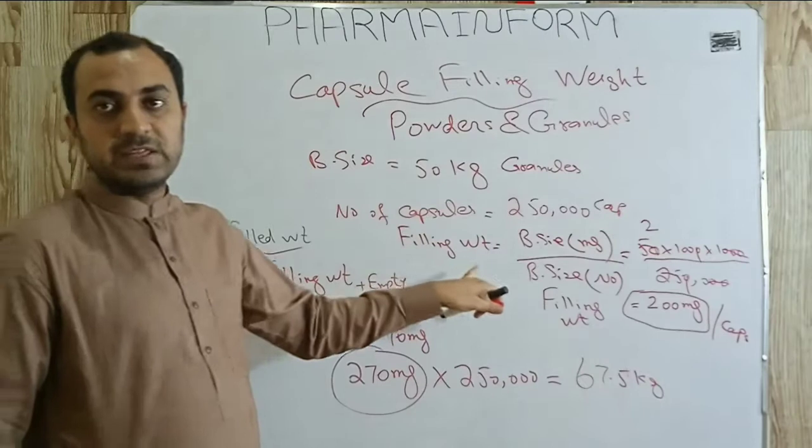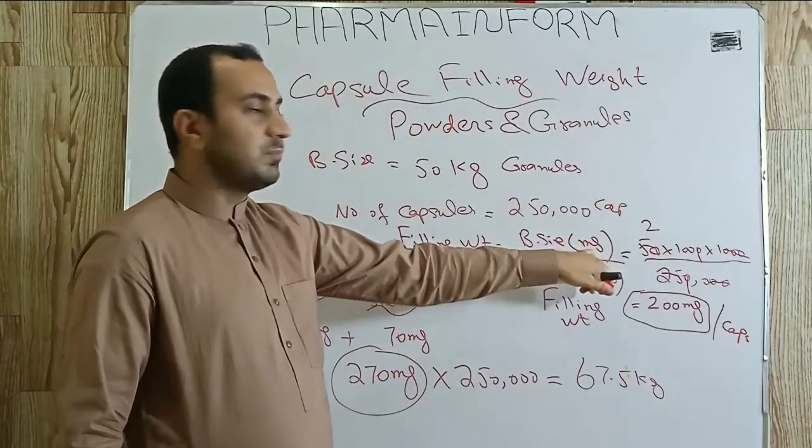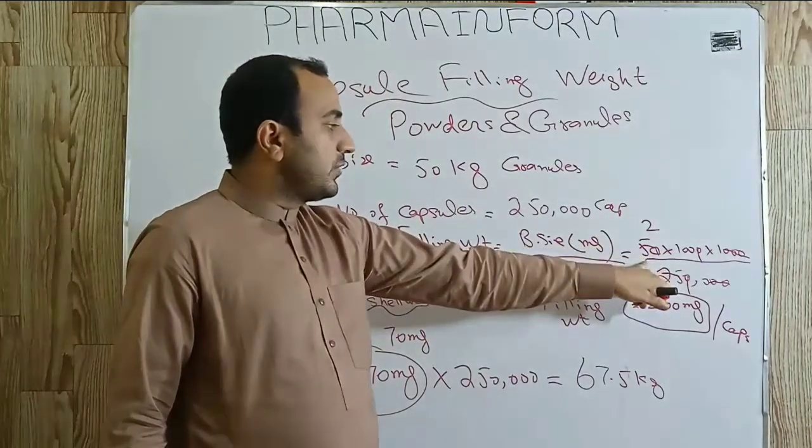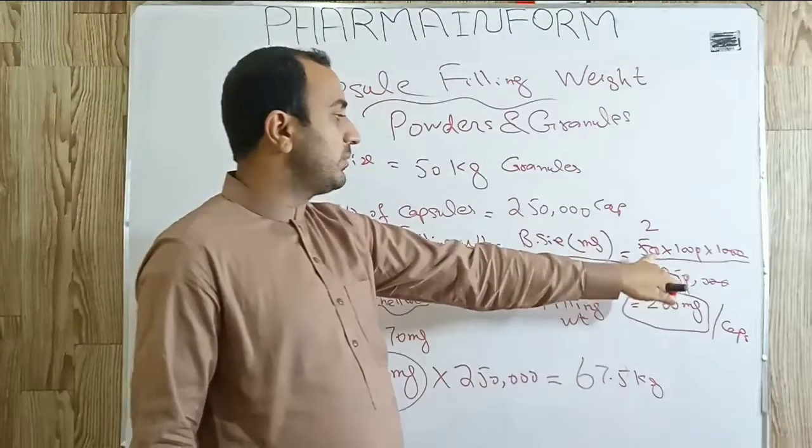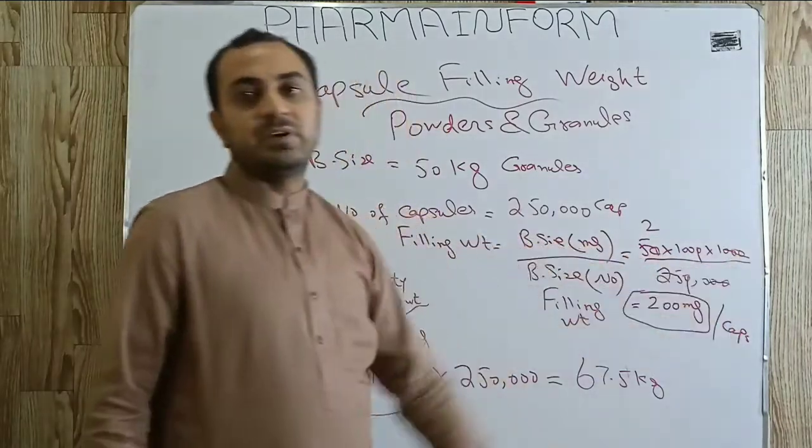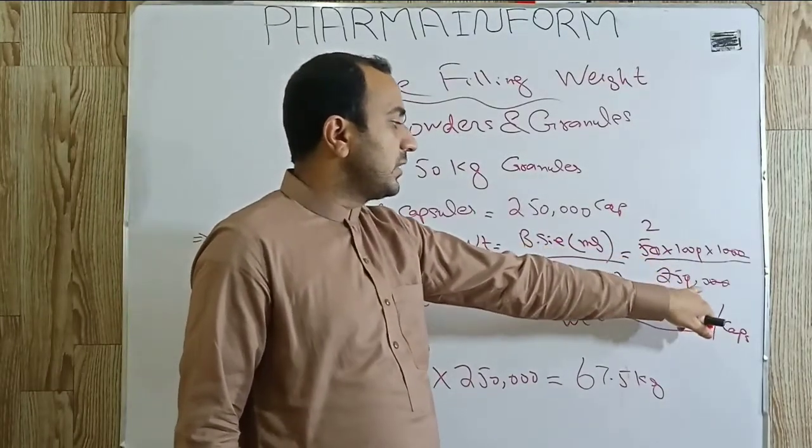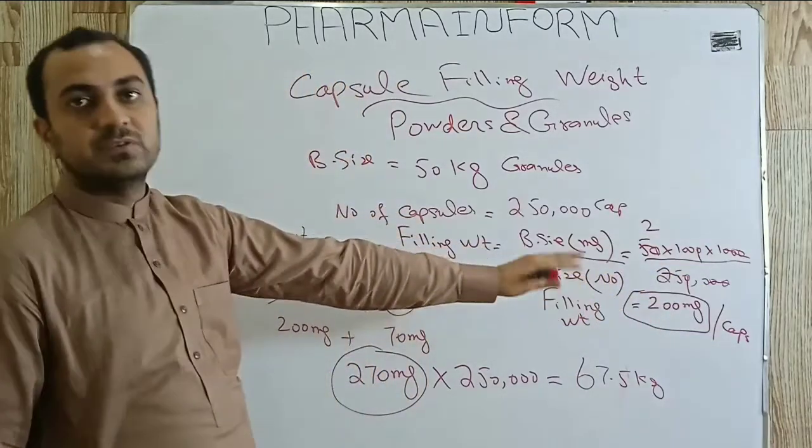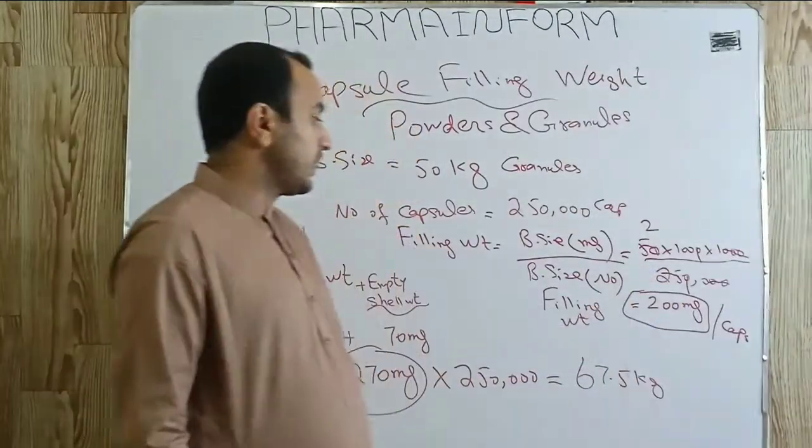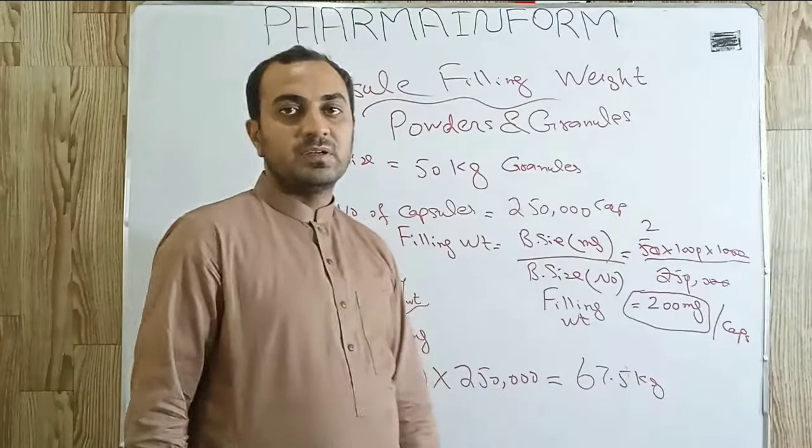For this, we have a formula: filling weight equals batch size in milligrams divided by batch size in numbers. To convert 50 kg into milligrams, first we multiply by 1000 to convert to grams, then multiply by 1000 again for milligrams. This gives us 50,000,000 mg divided by 250,000. When we solve it, we get the answer 200 mg per capsule. So the filling weight for our capsule is 200 mg.